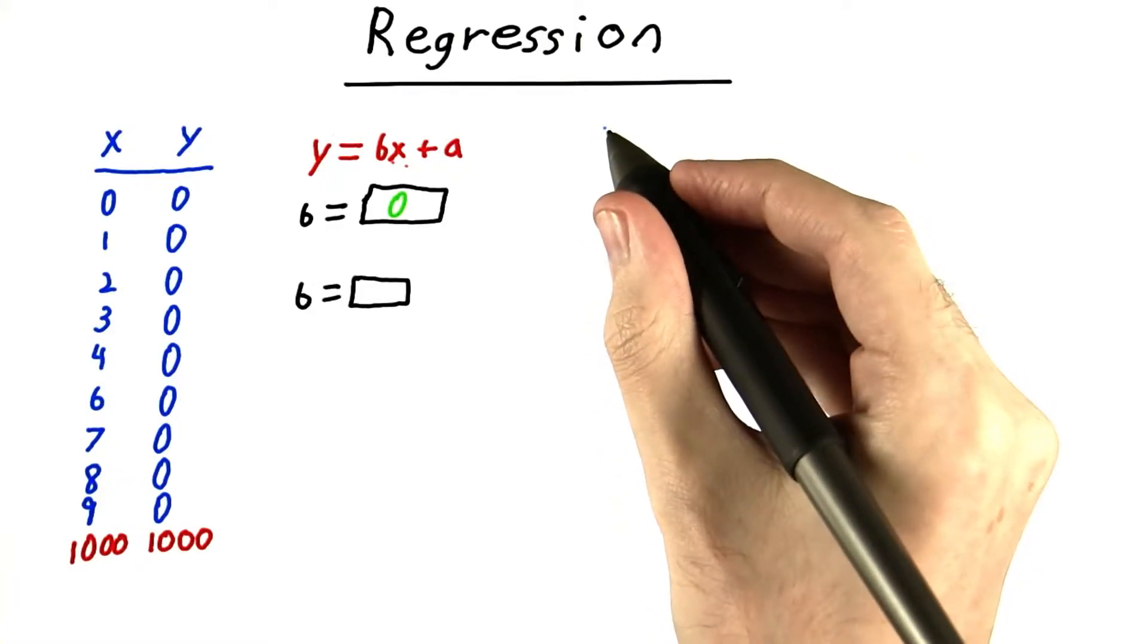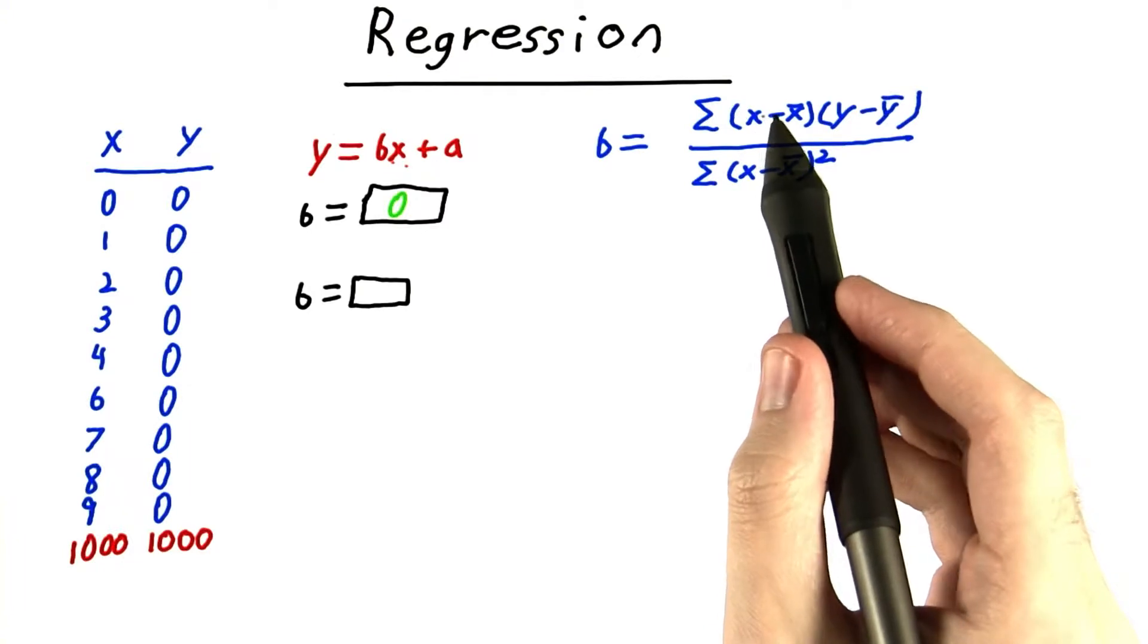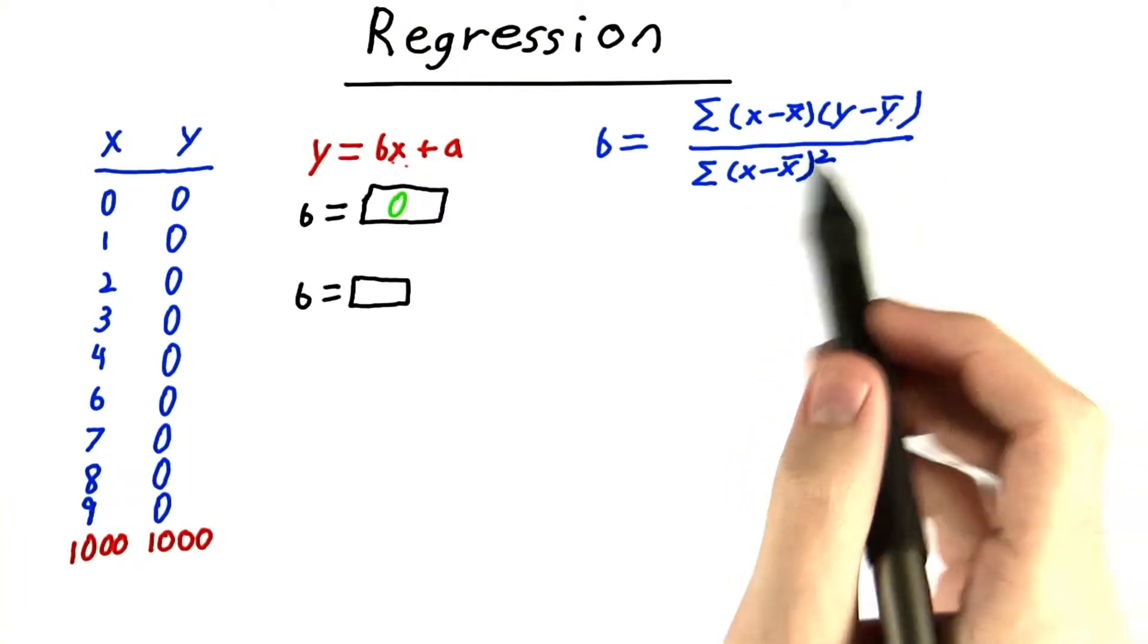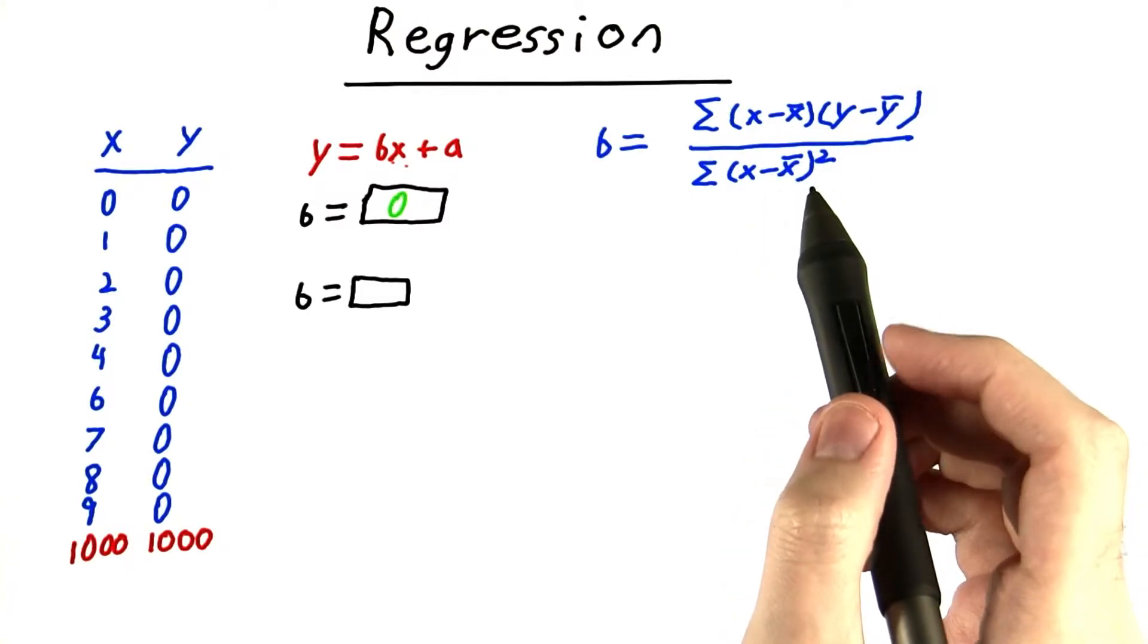To compute this, recall that b equals the sum of the product of the difference of the x's from the mean and the y's from the mean divided by the square difference between x and the mean.